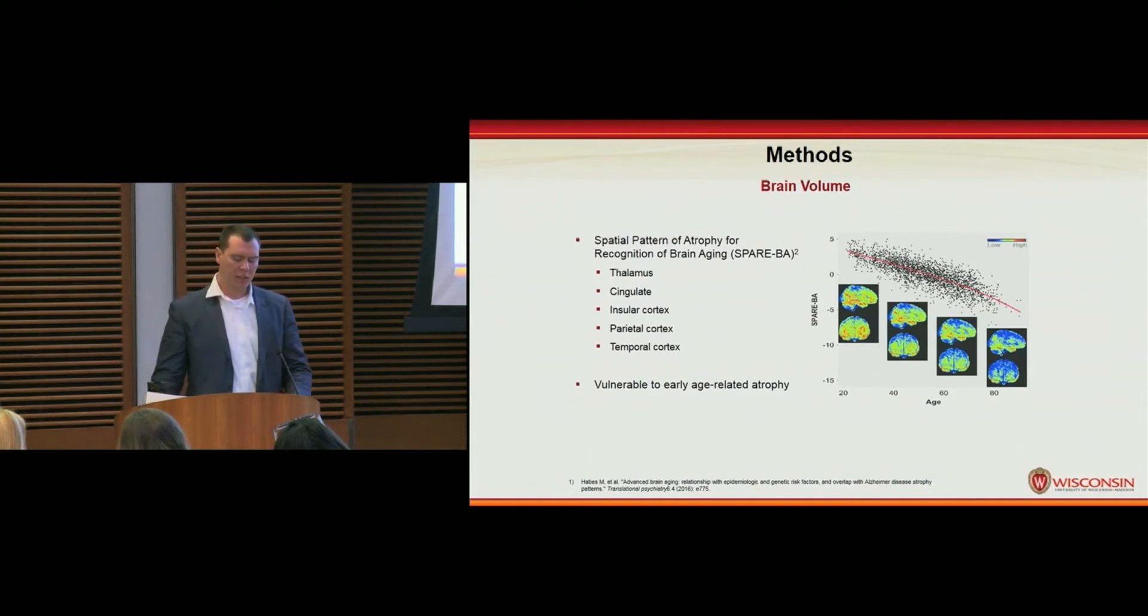We use the spatial pattern of atrophy for recognition of brain aging index as our measure of brain volume. SPARE-BA is a composite measure of five brain regions that have shown to be vulnerable to early age-related atrophy.